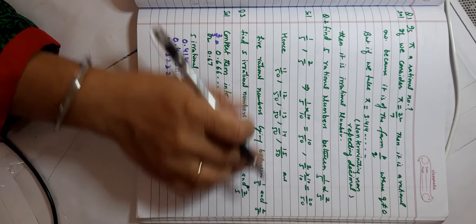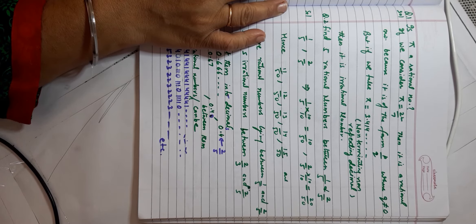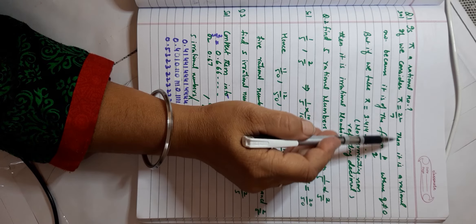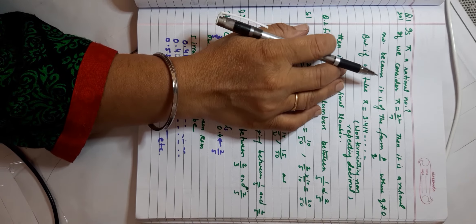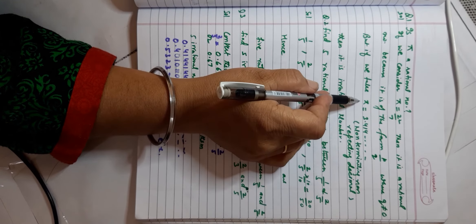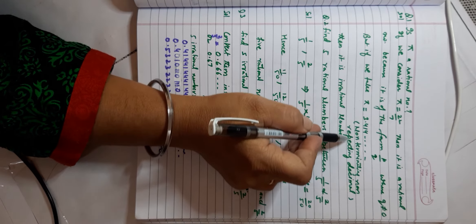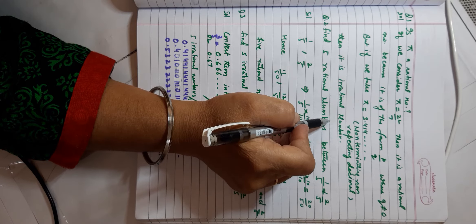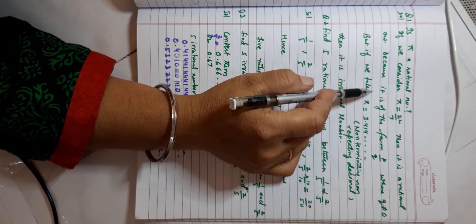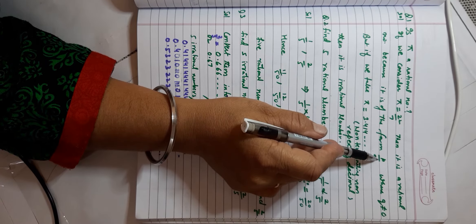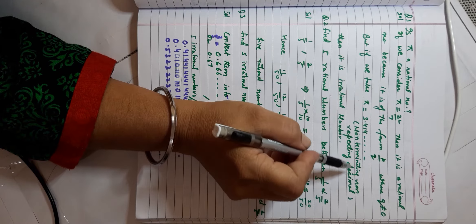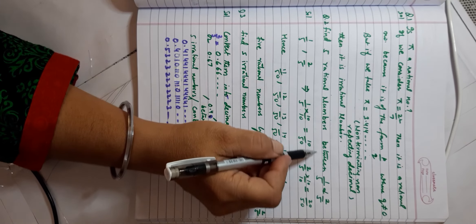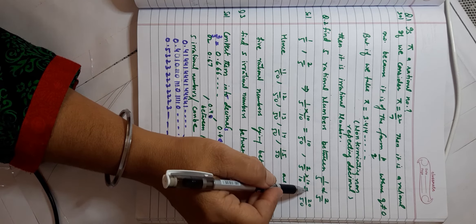A question often asked in exams: is π a rational number? If we consider π in the form 22/7, then it is a rational number. But if we take it in decimal form, π is a non-terminating non-repeating decimal, making it irrational. So in fractional form it is rational (p/q form), but when taken in decimal form it is not rational — it is an irrational number.